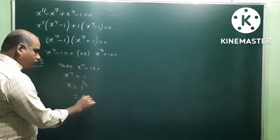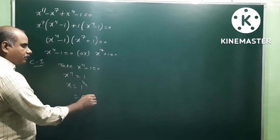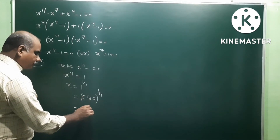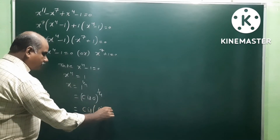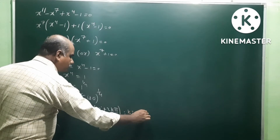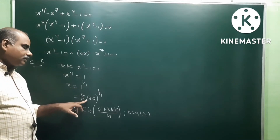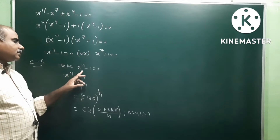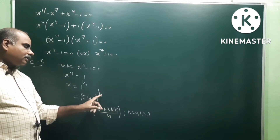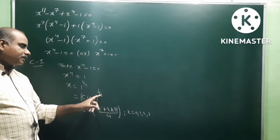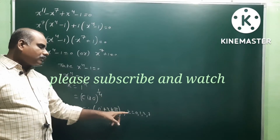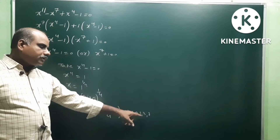So 1 represents cis 0 degrees, meaning 1 whole power 1 by 4. This can be written as cis of 0 plus 2kπ by 4, where k is equal to 0, 1, 2, 3. We treat n as the denominator — here n is equal to 4 — so we get 4 values of k from 0 to n minus 1, that is 0, 1, 2, 3 — total 4 values.